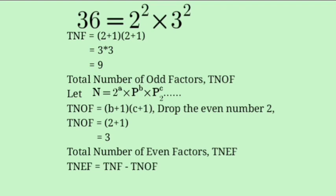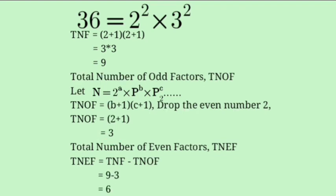Total number of even factors equals total number of factors minus total number of odd factors. We already have TNF = 9 and TNOF = 3, so TNEF = 9 minus 3 = 6.